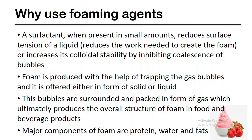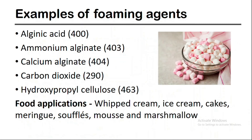Alginic acid, ammonium alginate, calcium alginate, carbon dioxide, and hydroxypropyl cellulose are some examples of foaming agents in the food industry.